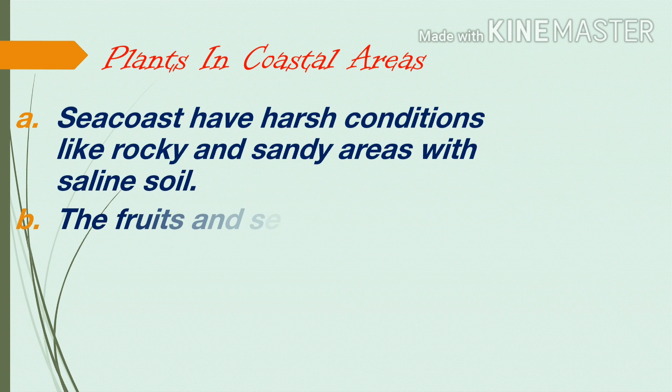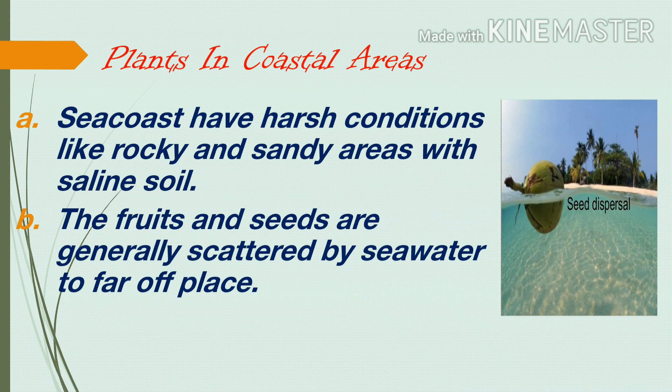Plants in coastal areas. Coastal areas along the seacoast have harsh conditions like rocky and sandy areas with saline soil, and the fruits and seeds are generally scattered by seawater to far-off places. Examples are coconut, dates, and palm.